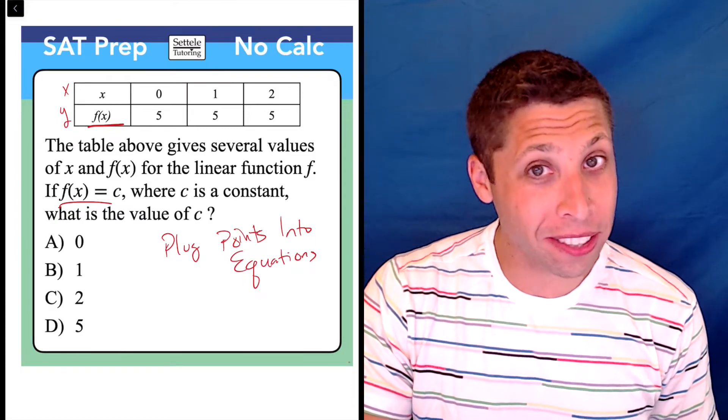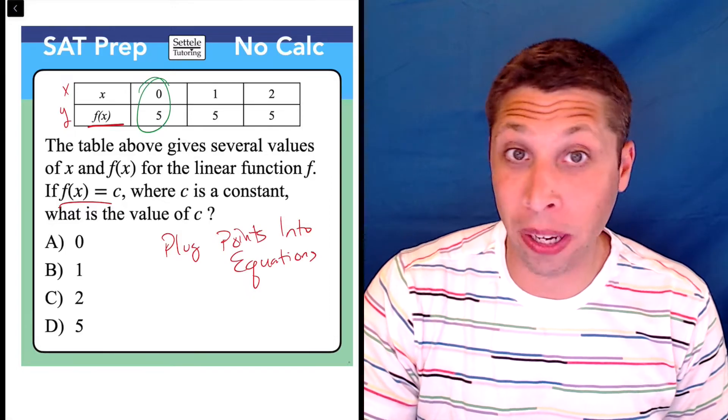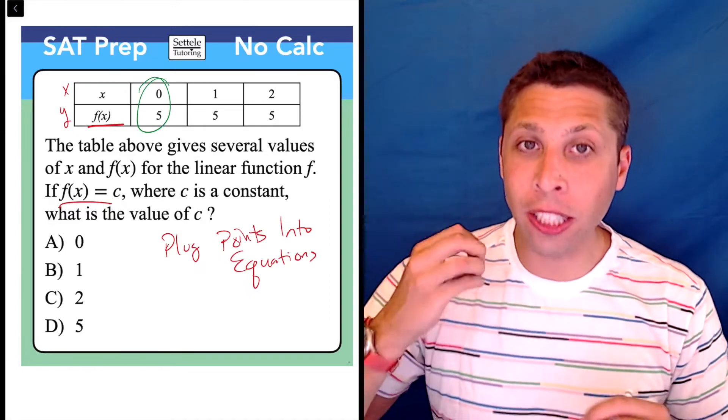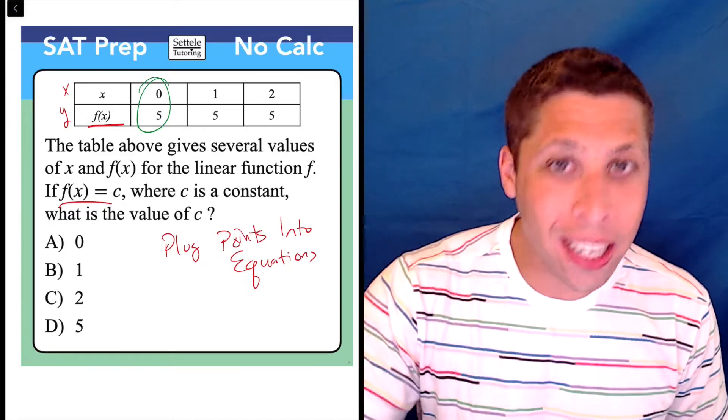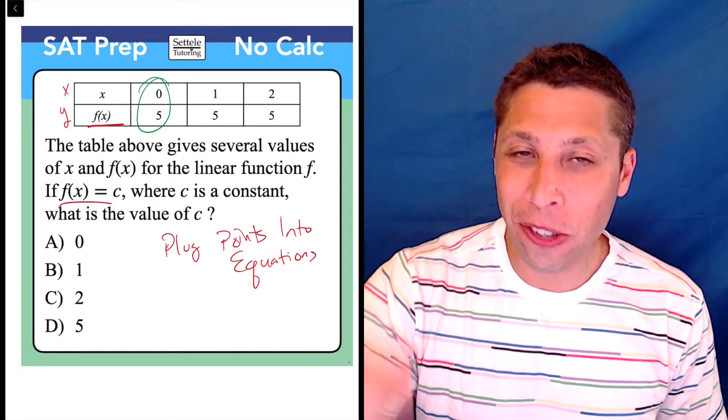So it really doesn't matter in this case which point we pick. Let's just take the first one since I usually pick zero anyway. But if we're plugging in correctly here, there is no x to plug into. There's a c, but there's no x.